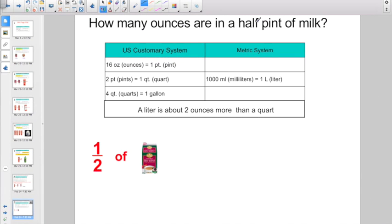How many ounces are in a half pint of milk? Well, how many ounces is in a whole pint? 16 ounces in a whole pint. So what's one half of 16? One half of 16, if we divide by the denominator, 16 divided by two leaves us eight ounces.